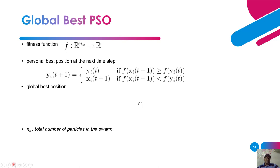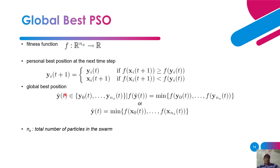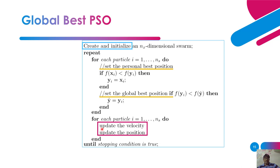The fitness function f has dimension n_x. The personal best position at the next time step is: y_i(t+1) = y_i(t) if f(x_i(t+1)) ≥ f(y_i(t)), or y_i(t+1) = x_i(t+1) if f(x_i(t+1)) < f(y_i(t)). The global best position is taken as ŷ(t) = argmin{f(x_1(t)), …, f(x_ns(t))}, where n_s is the total number of particles in the swarm.